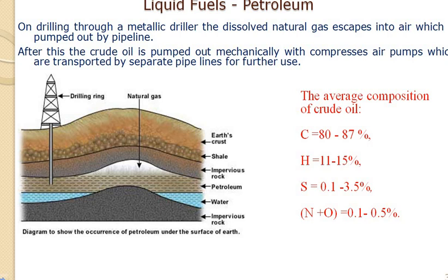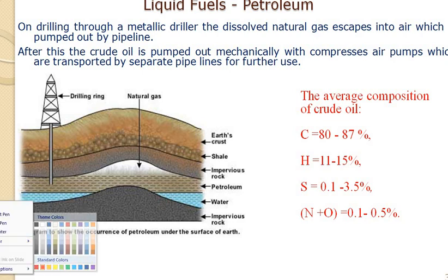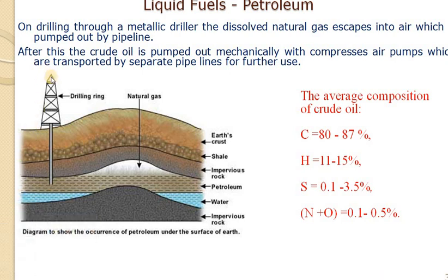These petroleum crude, categorized as liquid fuels, are obtained by drilling through a metallic driver. The metallic driver with a drilling ring sinks pipes deep into the earth's crust. There you find an impervious rock, above which you have the salt water or brine, then petroleum crude, and then natural gas.